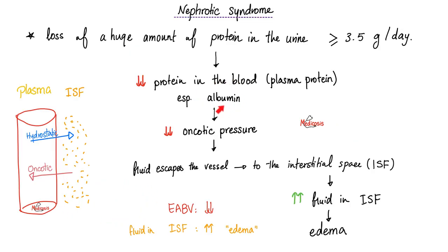Albumin used to be responsible for maintaining oncotic pressure to keep fluid inside the vessel. But now I've lost my albumin, lost my oncotic pressure. Fluid is leaving the vessel, going outside — that's why there's swelling. That's nephrotic syndrome.